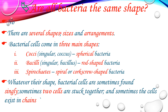Bacteria come in three main shapes. The first is called cocci (singular: coccus), which are spherical-shaped bacteria. The second group is known as bacilli (singular: bacillus), which have a rod shape — like a piece of chalk. The third is spirochetes, which have a spiral or corkscrew shape.